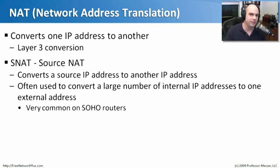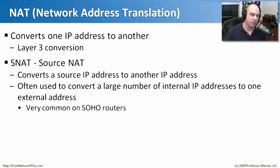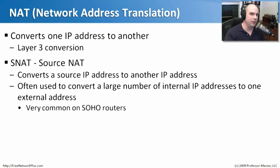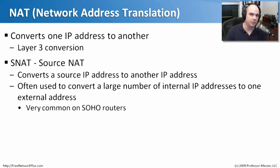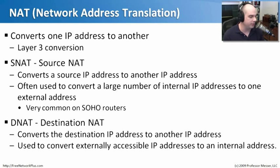There are different kinds of NATing. There's one called source NAT, or SNAT. The source NAT converts the source IP address to another IP address. This is when you want to take a large number of internal IP addresses in your organization and convert them so they look like one single IP address when they talk out on the internet. You might have 1,000 devices on your network but only use one public address to communicate out on the internet — very efficient, and that's almost always what we're doing with small home office routers today.